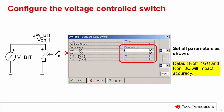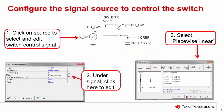The on voltage and the off voltage set the voltage level that will cause the switch to open or close. We will use a square wave signal from the acquisition time source to open and close the switch. In this case, the switch will open with an input of zero volts and will close with an input of one volt. Now, you can configure the signal source to control the bit switch.